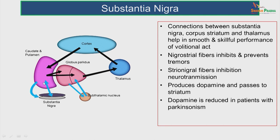The nigrostriatal fibers inhibit and prevent tremors. The strionigral fibers inhibit neurotransmission in the substantia nigra, and dopamine produced here goes to the striatum. If dopamine is reduced, the patient can present with Parkinsonian tremors. That is why the connection between the substantia nigra, striatum, and thalamus is very important.